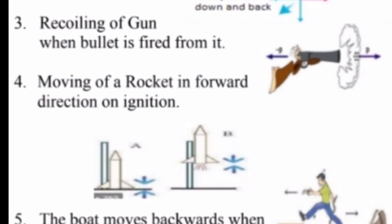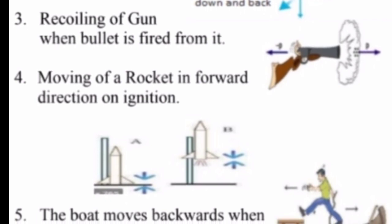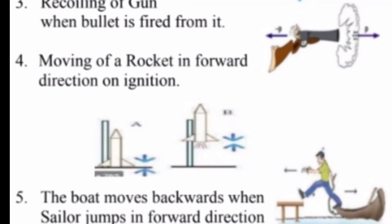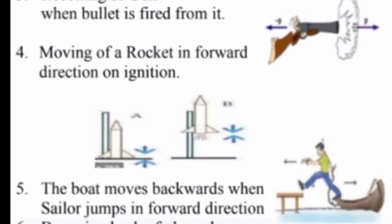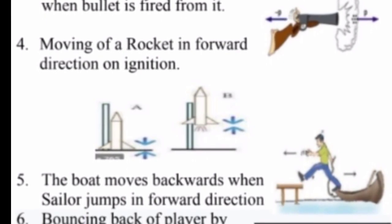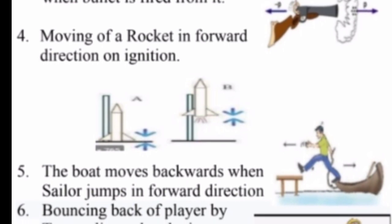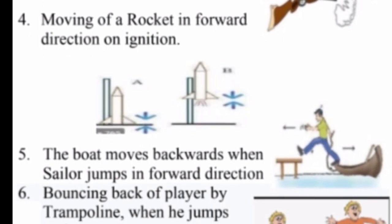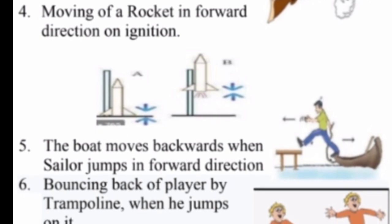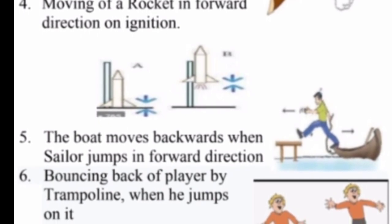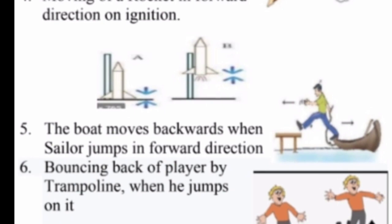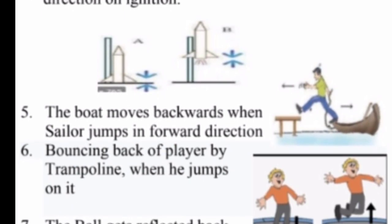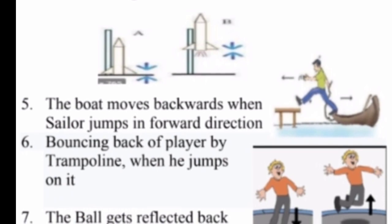The recoiling of a gun when a bullet is fired from it — the gun recoils due to the reaction when the bullet is fired. Another example is the moving of a rocket in the forward direction on ignition.